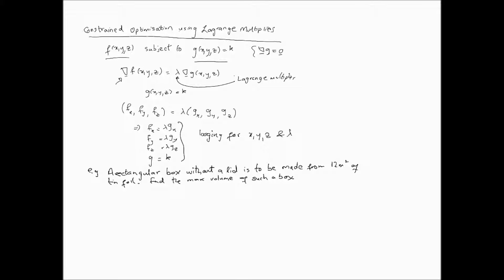The best thing to do is look at an example. We've already done this question before when we did local maximum and minimum as an application example. It's interesting to see how we can use Lagrange multipliers to solve the same problem. In this case we're talking about a box which doesn't have a lid. The volume of any such box with dimensions x, y, and z would be V = xyz.